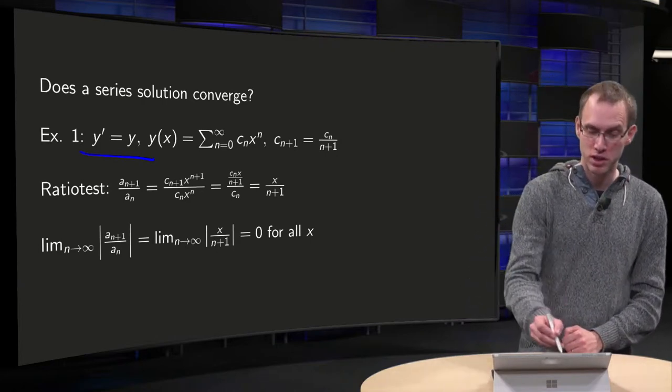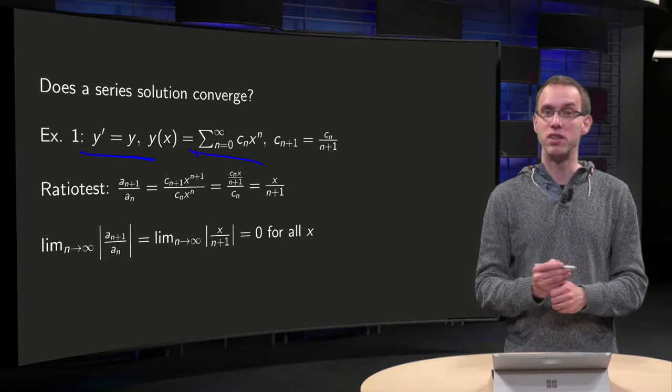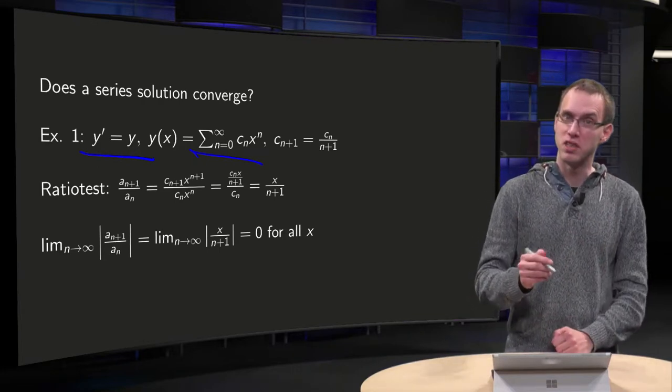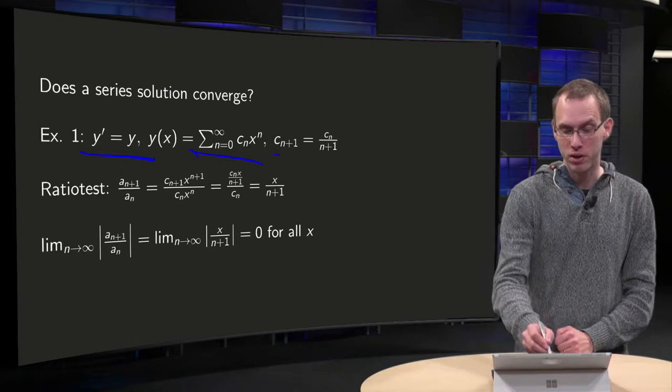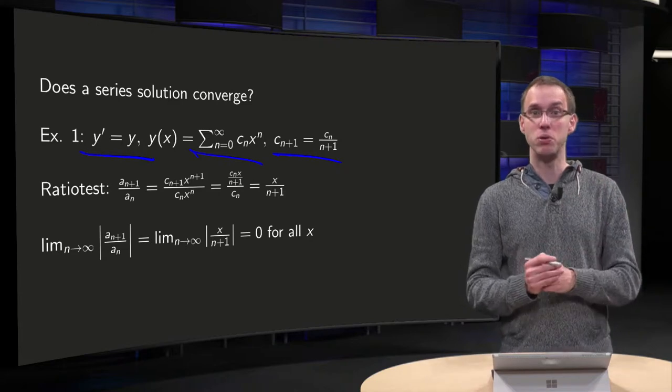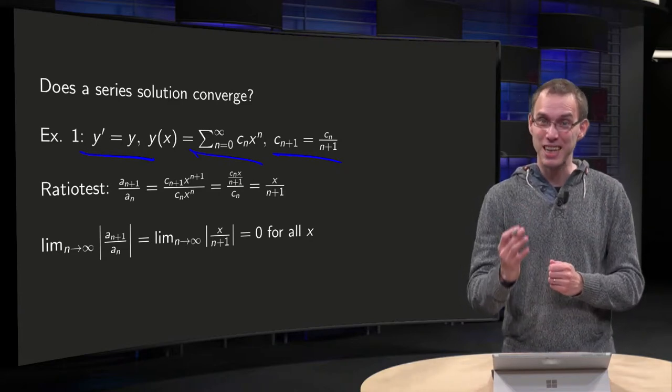So if we use the power series, sum n from 0 to infinity, cn x to the power n, and if we plug this in, we have seen this in an earlier example, then we got cn plus 1 equals cn divided by n plus 1, and from this we could determine all cn explicitly.